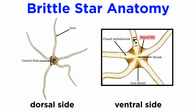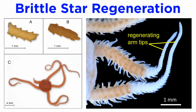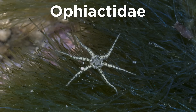They also have unique structures known as bursae that open towards the oral surface by genital slits at the base of the arms. These bursae circulate water for gas exchange and aid in the discharge of sex cells. Like the sea stars, the brittle stars are capable of extreme regeneration, and some species, like the six-armed members of family Ophiactidae, can split their central disc in two and reproduce through fission.